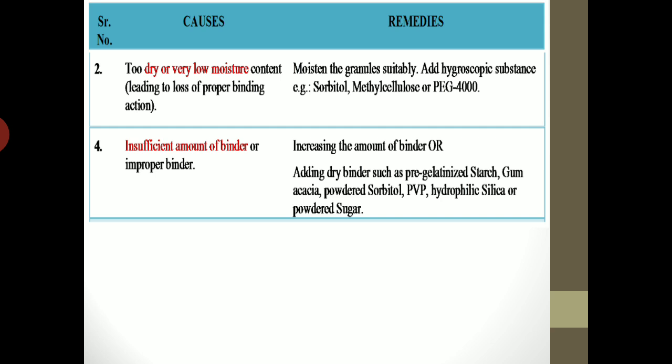The last reason behind capping, lamination, chipping, or cracking is an insufficient amount of binder or improper binder. If there is insufficient binder, the strength and hardness of the tablet will not be adequate, leading to these defects. The remedy is to increase the amount of binder or add dry binders such as pregelatinized starch, gum acacia powder, sorbitol, PVP, hydrophilic silica, or powdered sugar. These are all the reasons and remedies behind capping, lamination, cracking, and chipping.